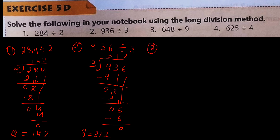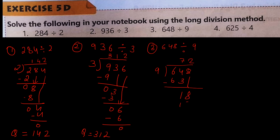Number 3: 648 divided by 9. We cannot divide 6 by 9 since 9 is greater, so we take two numbers: 64. 9×7=63, so 64 minus 63 is 1. Bring down 8, making 18. 9×2=18, here 0. So Q is equal to 72.